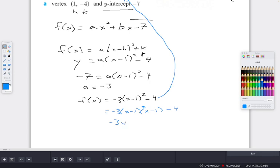So negative 3x squared. Then we have negative 2x times negative 3 is positive 6x. And then negative 1 times negative 1 is positive 1 times negative 3 is negative 3 minus 4 is negative 7, which is good because it tells us that the y-intercept is negative 7. So here your final answer is -3x² + 6x - 7.